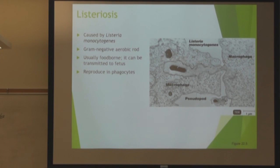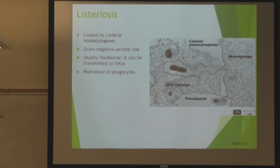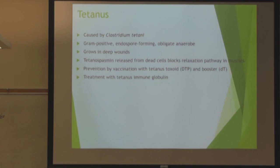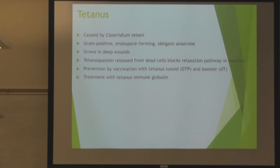Listeria can cause nervous system infection as well — gram-negative rod, food-borne, and can be transmitted to the fetus. For Clostridium tetanus: gram-positive, has endospores, and grows in deep wounds. Know just the pathways it affects — gram-positive with endospores.